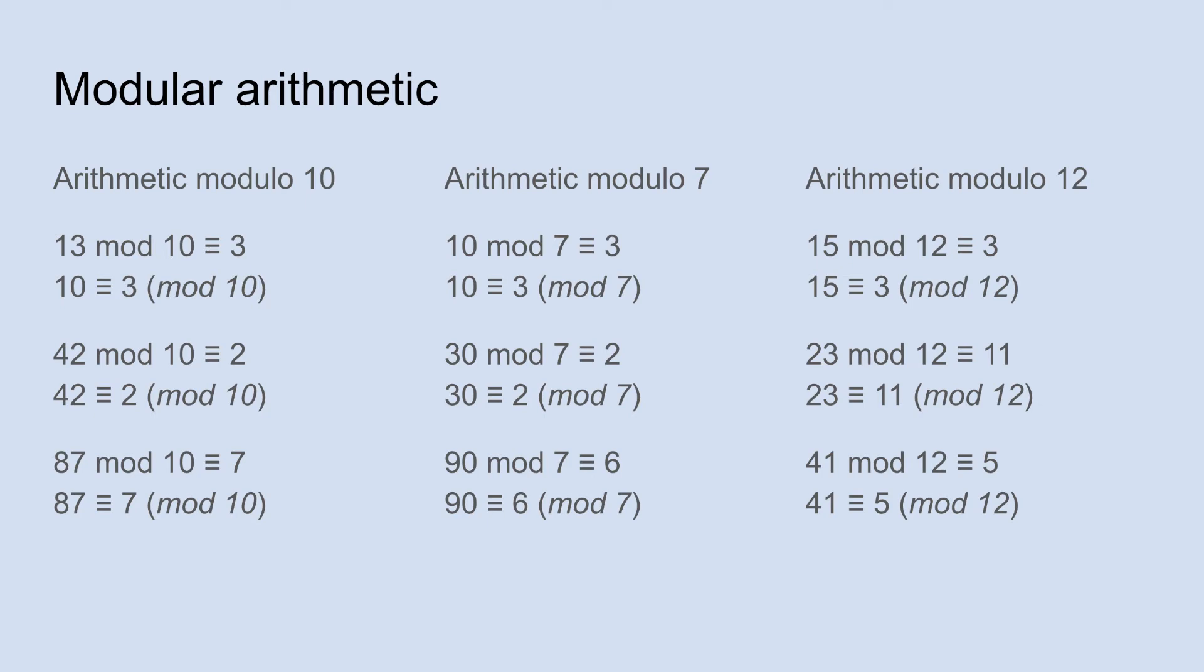Now, again, if you are coming to this from the video on calculating the day of the week based on any given date, you need to do arithmetic modulo 7 because we have 7 days in the week. And so it's very important for that algorithm.